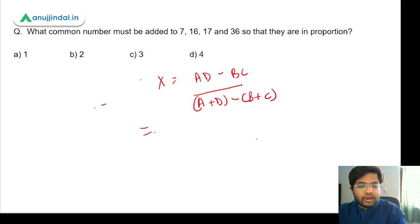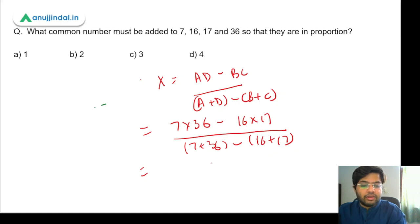So now A times D is (7 into 36) minus (16 into 17) upon (7 plus 36) minus (16 plus 17). This gives us 252.